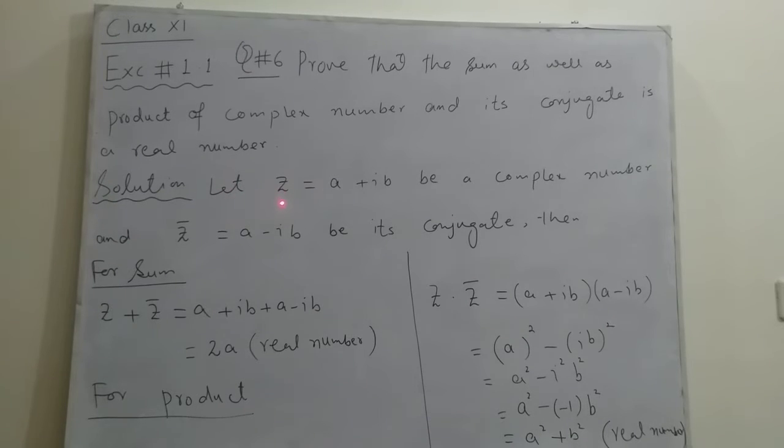Let z equals a plus iota b be a complex number and z bar equals a minus iota b be its conjugate. As we know, when we take conjugate of any complex number,